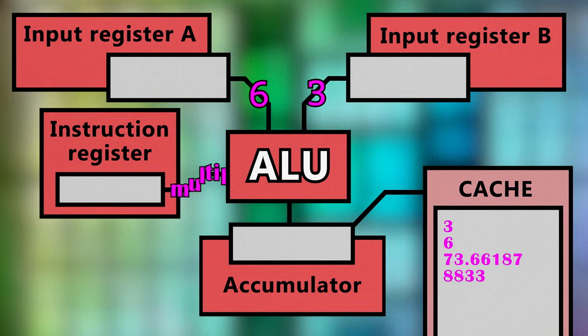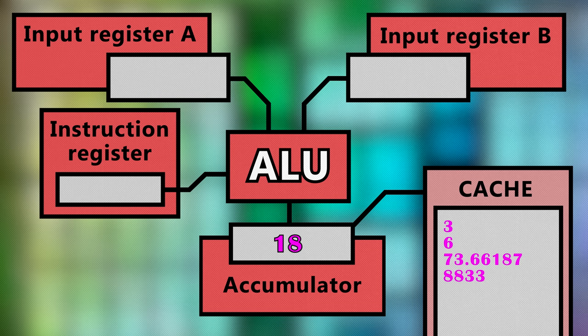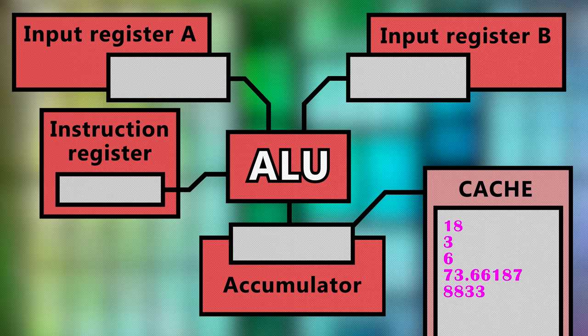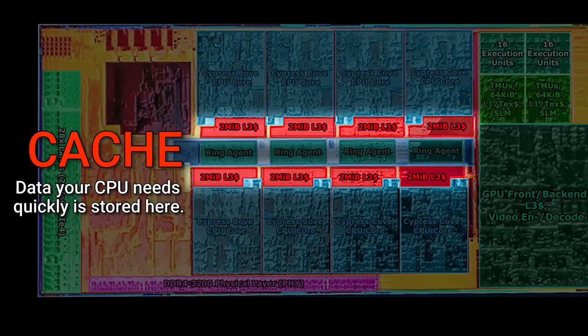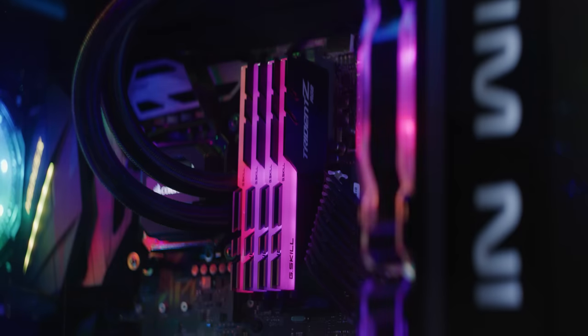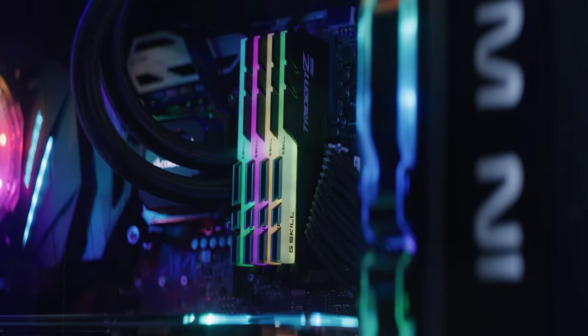The ALU will then figure out the product — 18 in this case — and send the result to yet another part of the core called an accumulator. The accumulator then sends the result to the cache, which is a small amount of extremely fast memory built into each core. This data can then be read by the program that requests it. The cache also sends data the other direction — it holds the data and the instruction the CPU has to process before that data enters the ALU. The data is initially fetched from your main system RAM, but having it in the cache before the cores need to process it makes your PC run much faster.